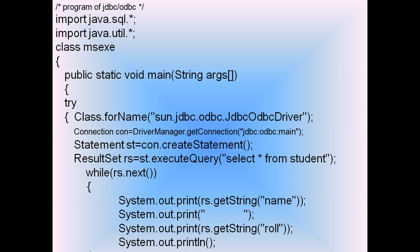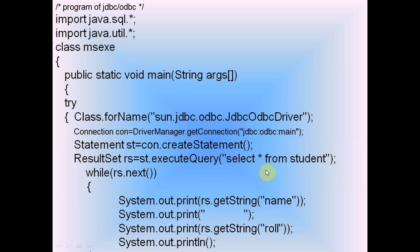The third statement is: Statement st = connection.createStatement(). We are creating a blank statement without passing any argument. Then we write: ResultSet rs = st.executeQuery("SELECT * FROM student"). Alternatively, if the query were passed inside createStatement, we would call st.executeQuery() with empty brackets. In this example, the query is passed directly to executeQuery.